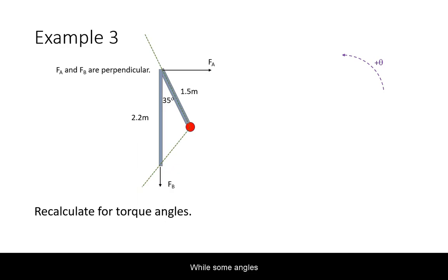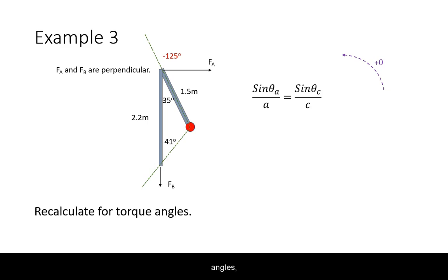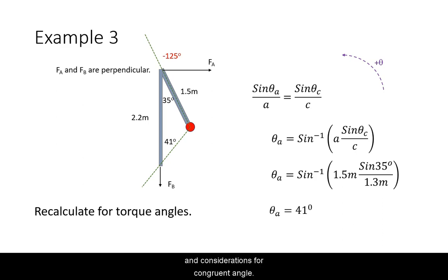While some angles will be easy to calculate, you may have to review your geometry to calculate both radial distances, as well as angles using principles such as the laws of sines and cosines and considerations for congruent angles.